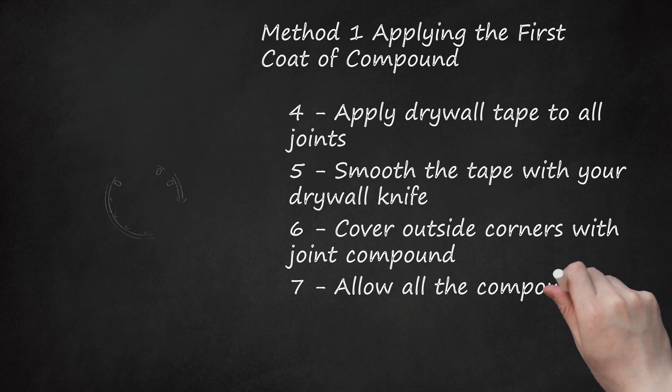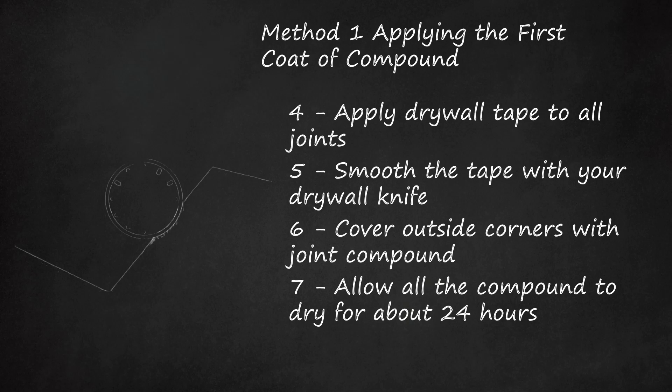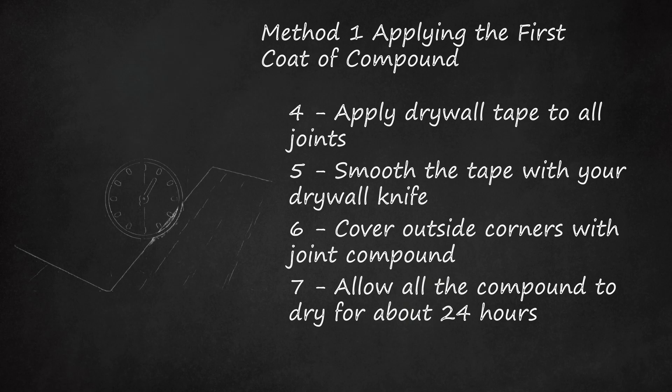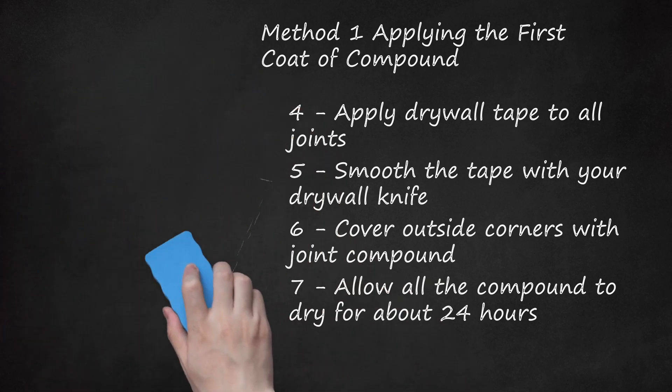Step 7: Allow All the Compound to Dry for About 24 Hours. At this point, after the first layer of mud, your drywall is still going to look patchy. Don't be concerned about being able to see a little drywall tape or having different consistencies on mud surfaces. You're going to apply at least another coat of compound. These imperfections will even out and become invisible soon.